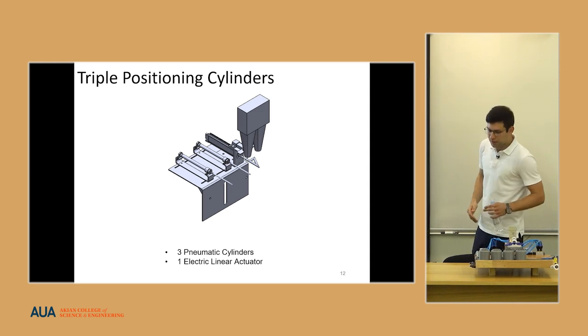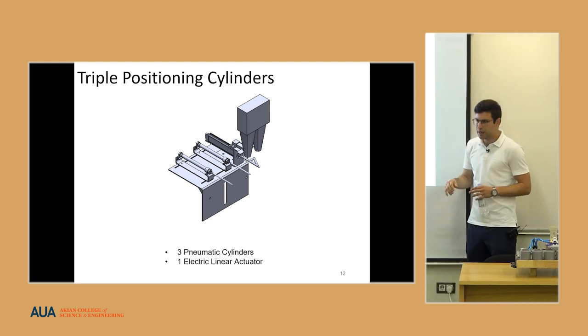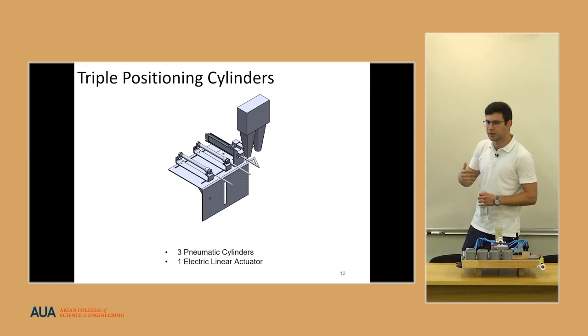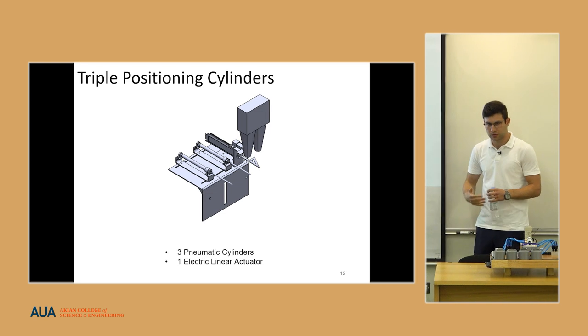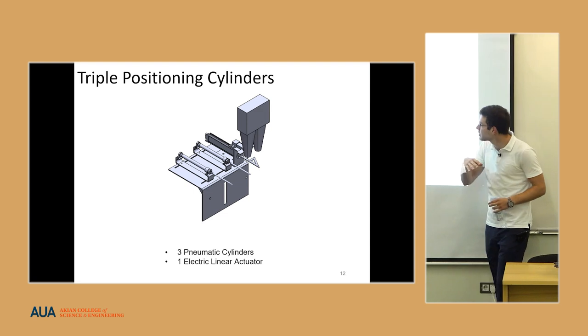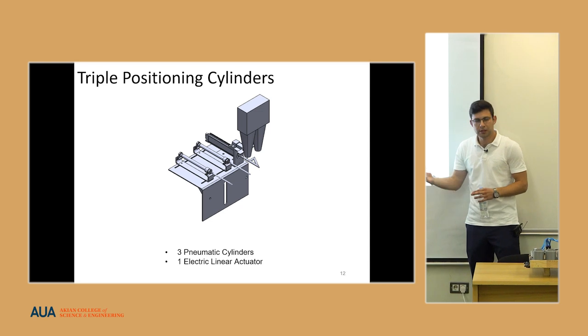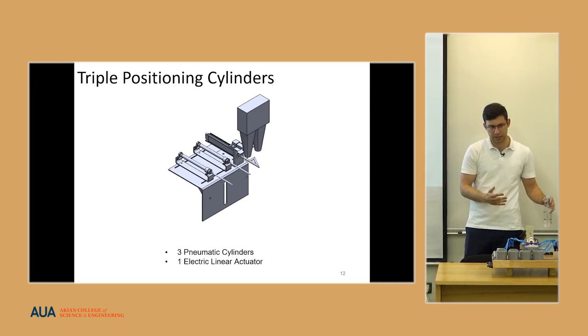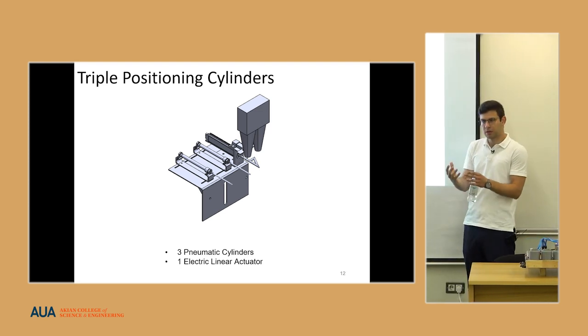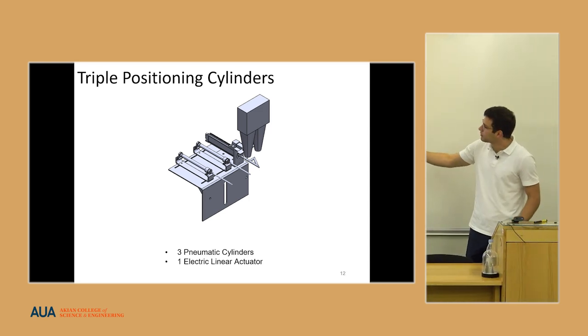So why do we need that? As I told, the pill counter had two nozzles and it is counting and dropping the pills continuously. There is nothing to stop the flow of the pills. So I use this electrical linear actuator to close the mouths of the nozzles to prevent the flow of the pills when the bottles are moving, when we are replacing the bottles. When the bottles are standing exactly below the nozzles, I can open them and the pills will flow into the bottles.